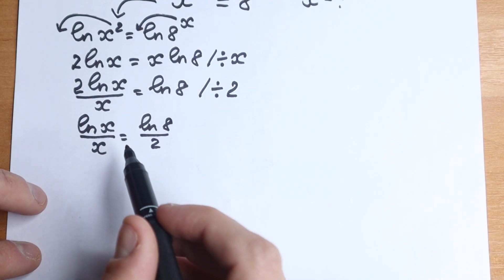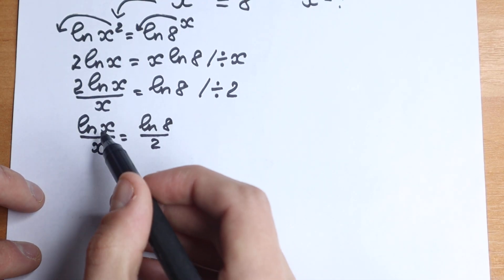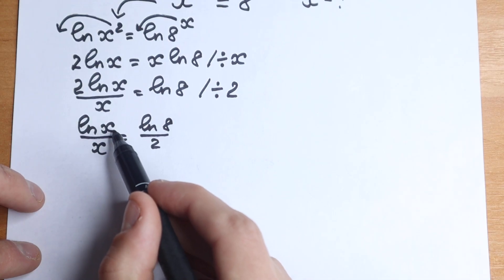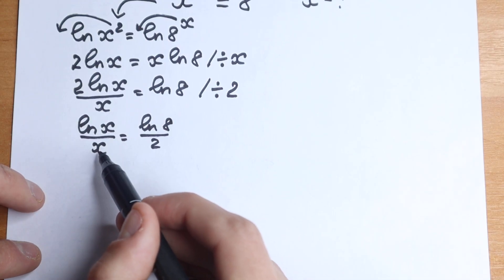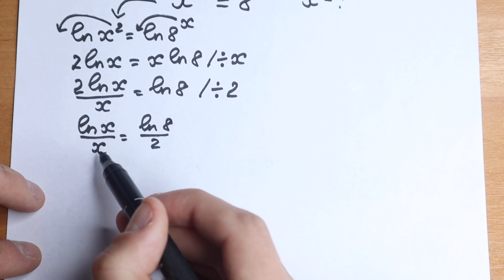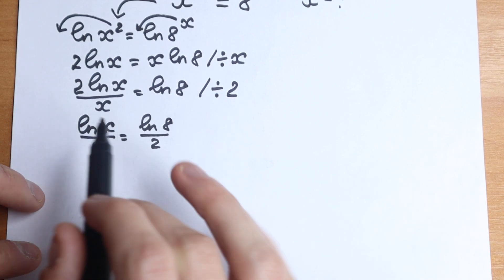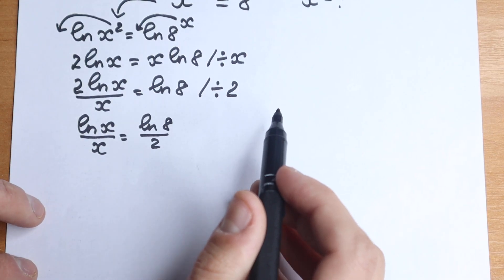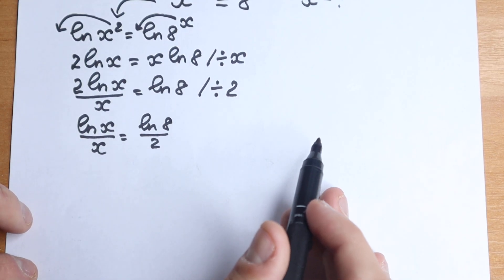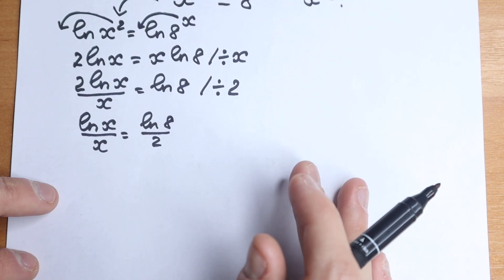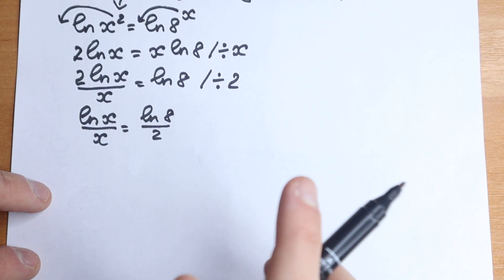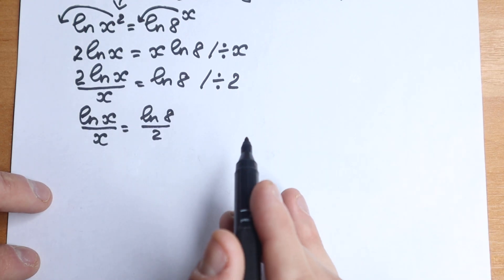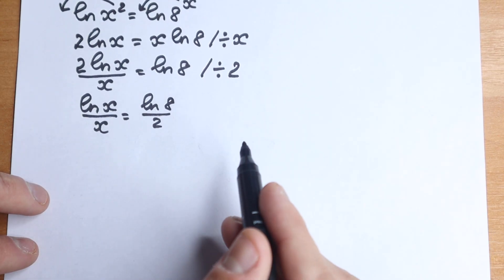Right now it's really hard to isolate x, because x appears inside the natural log and also in the denominator — cross-multiplying won't work. We need to use the Lambert W function, because this is a really great example to apply it.